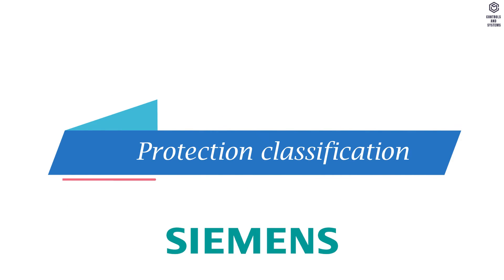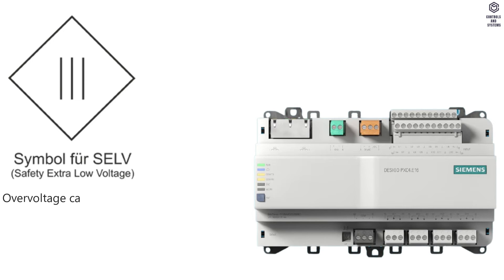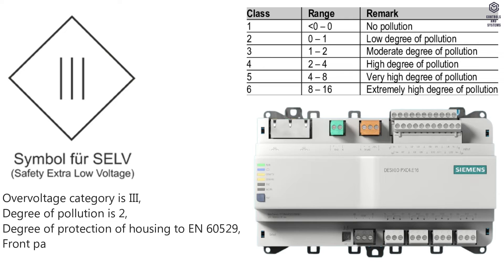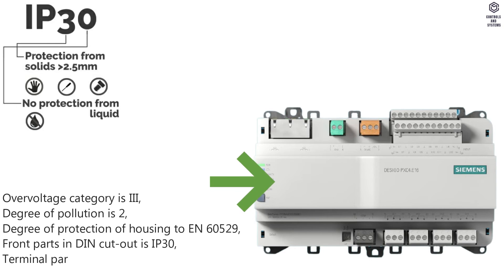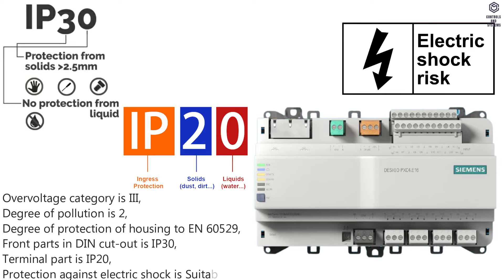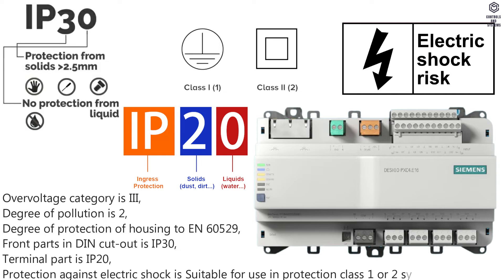Protection Classification: Over Voltage Category is 3, Degree of Pollution is 2. Degree of Protection of Housing to EN 60529: Front Parts and DIN Cutout is IP30, Terminal Part is IP20. Protection against Electric Shock is suitable for use in Protection Class 1 or 2 Systems.